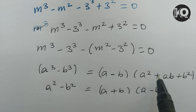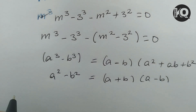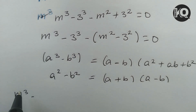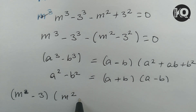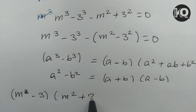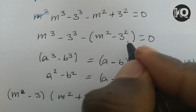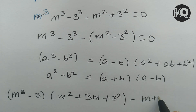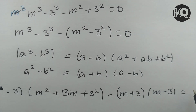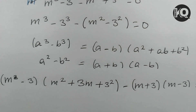We apply these identities. m cubed minus 3 cubed becomes (m minus 3)(m squared plus 3m plus 9). And m squared minus 3 squared becomes (m plus 3)(m minus 3). So the equation becomes (m minus 3)(m squared plus 3m plus 9) minus (m plus 3)(m minus 3) equals 0.